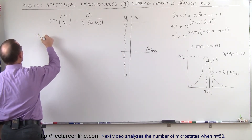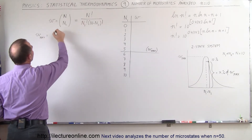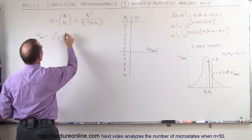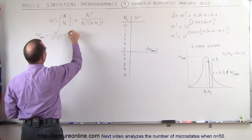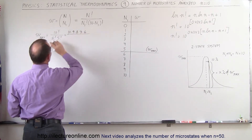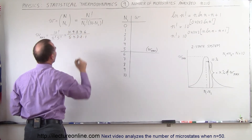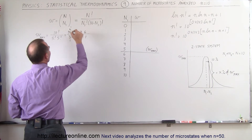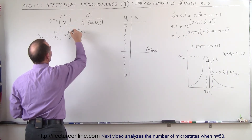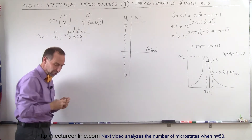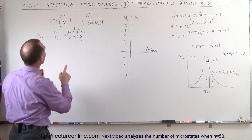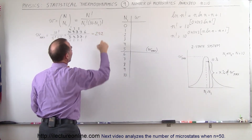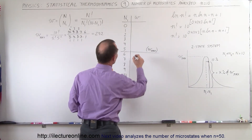W_max equals 10 factorial divided by 5 factorial times 5 factorial. That is 10 times 9 times 8 times 7 times 6, divided by 5 factorial, which is 5 times 4 times 3 times 2 times 1. Simplifying: 5 goes into 10 twice, 2 goes into 2 once, 4 goes into 8 twice, 3 goes into 9 three times. That gives us 42 times 6, which equals 252. So the maximum number of microstates when there's an equal number of objects in both states is 252.